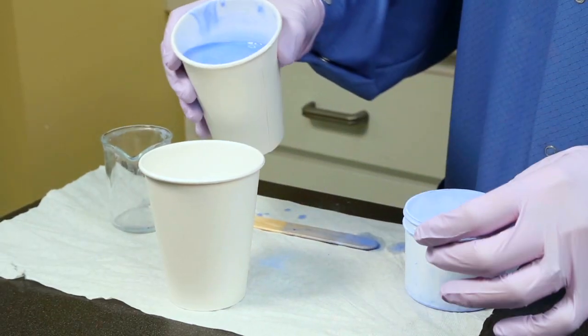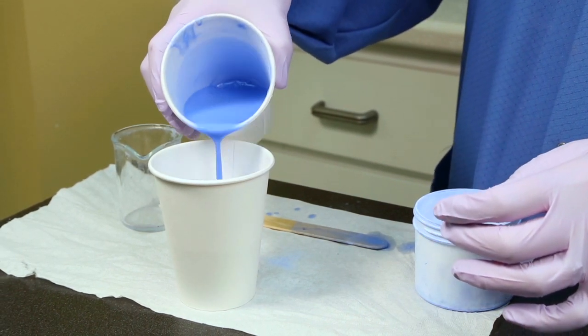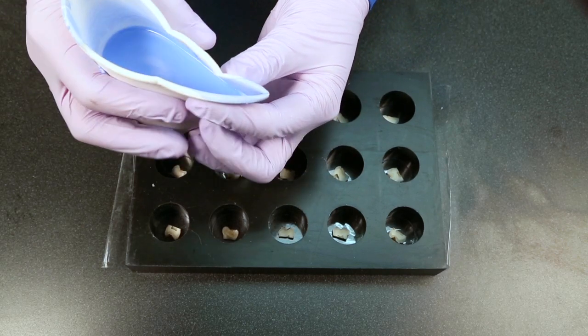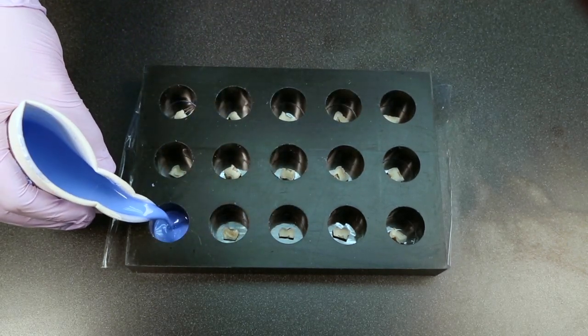Put half the mixture in a second cup to make pouring easier to control with less drip. Fold the lip of the cup to form a spout and pour mixture into the mold, filling each hole to the top.